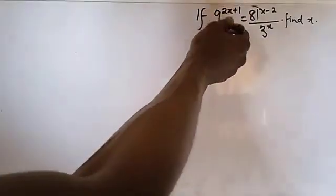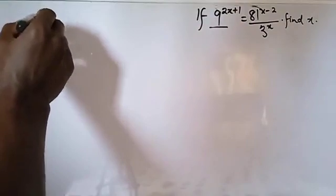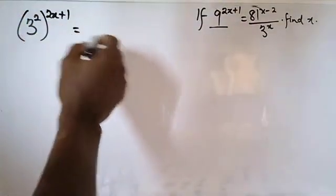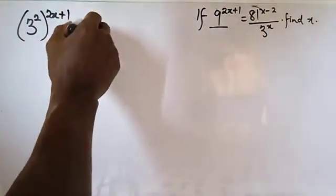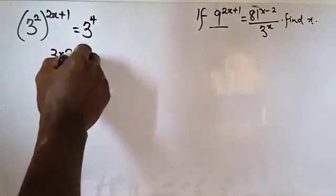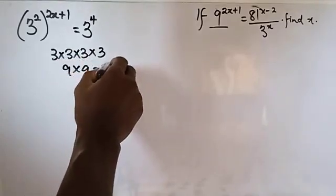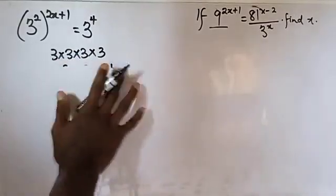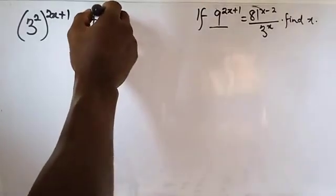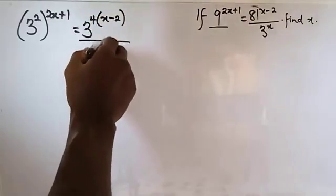So getting started: 9 is 3 squared, so we write 3 raised to the power 2, into the bracket (2x plus 1). Now for 81, that will be 3 raised to power 4 — which is 3 times 3 times 3 times 3, giving 9 times 9, which is 81. So we have 3 raised to power 4, to the power (x minus 2), all over 3 raised to power x.